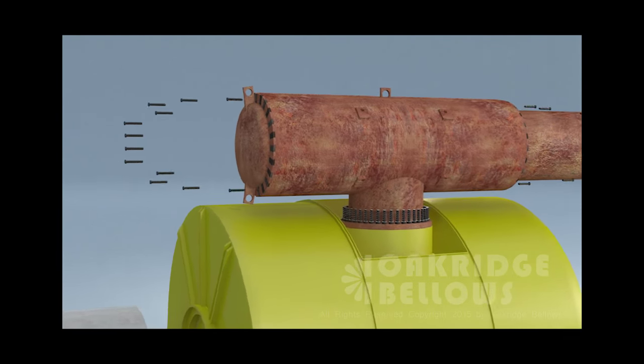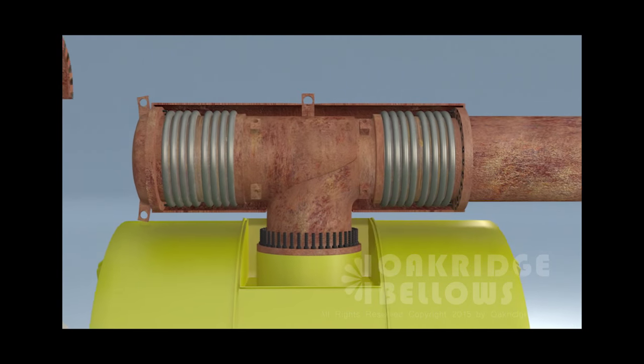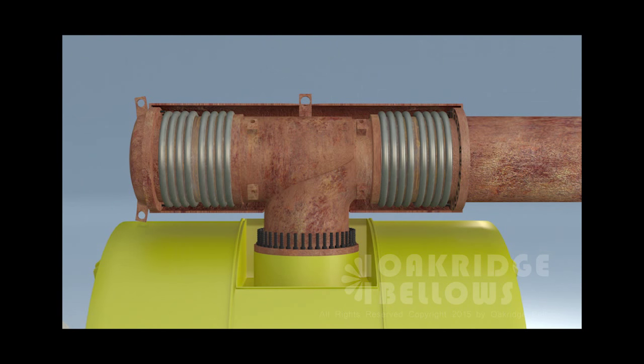First we need to strip away all that insulation. We're getting down to bare metal. Let's take that cover off. You've got bellows up underneath there.